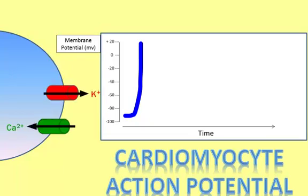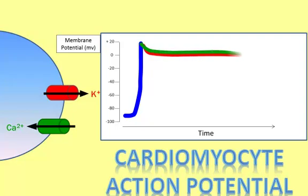Two ions, potassium and calcium, are responsible for the next phase of the action potential. When voltage-gated potassium channels open, potassium rushes out of the cell. At approximately the same time, voltage-gated calcium channels open, and calcium rushes into the cell. Since both ions are positively charged, there is very little change in the overall membrane potential. As we follow this portion of the action potential, we see a flat stretch in which there is very little change in membrane potential. This phase is called the plateau, and it is unique to cardiomyocytes.